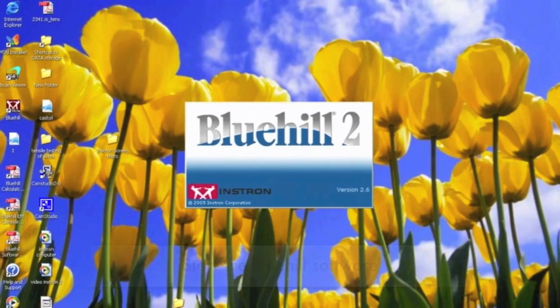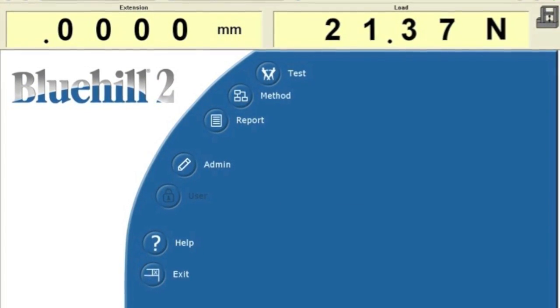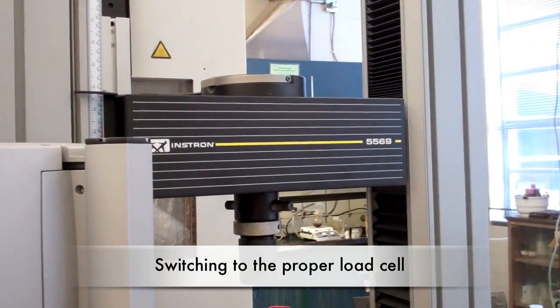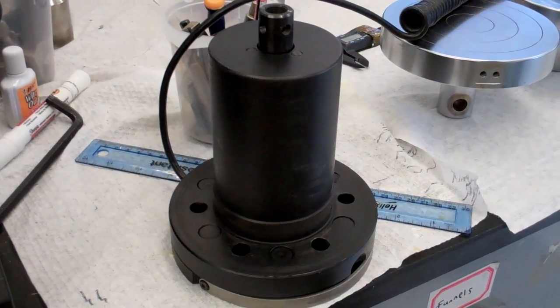Double-click on the Bluehill icon to start the software. The software shows the extension and load at the top. First, you need to choose the proper load cell. There are 2 kN and 5 kN load cells that are chosen depending on the load range and sensitivity of the sample.